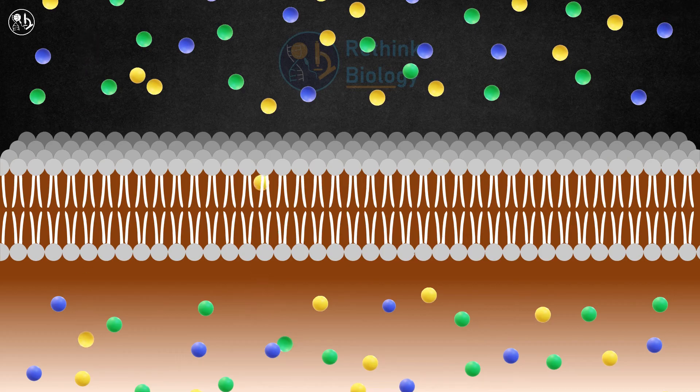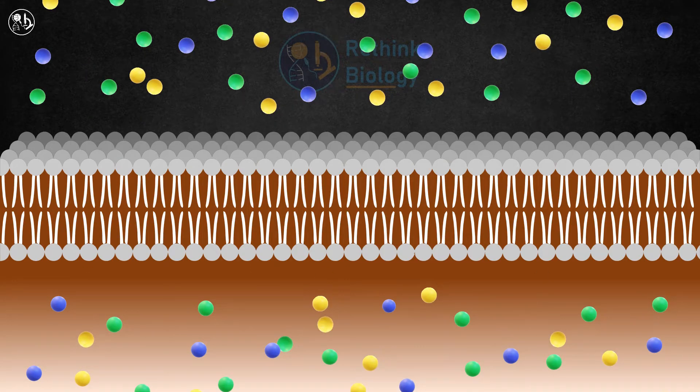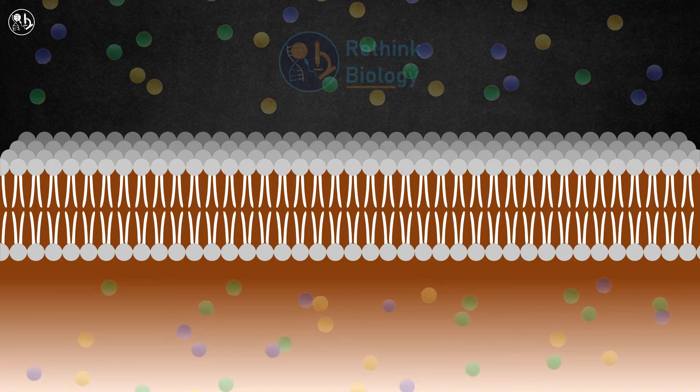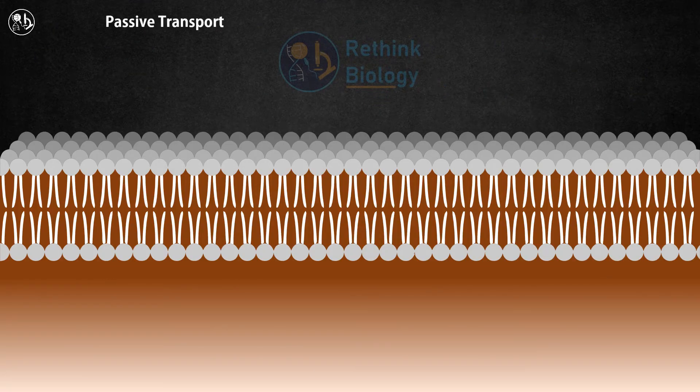To survive, a cell must maintain a stable internal environment. One way it does this is by moving substances in and out of the cell. There are two types of transport: passive and active.